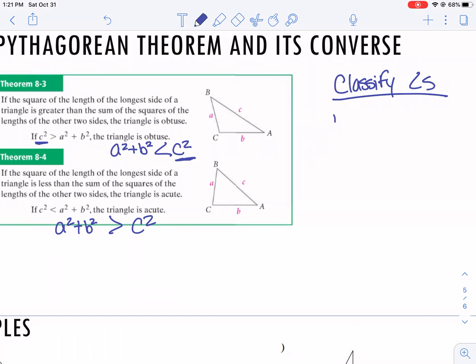If I have a squared plus b squared is greater than c squared, it is acute. If I have a squared plus b squared and it's less than c squared, it is obtuse. And if a squared plus b squared equals c squared, then it is a right triangle.